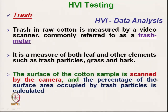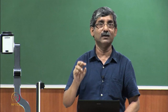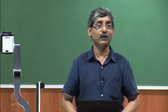The surface of the cotton sample is scanned by the camera. Any trash present inside the fibre mass will not actually be measured here, but the assumption is that trash particles are evenly distributed. The percentage of the surface area occupied by trash is calculated. Knowing the total area and the total area of trash or foreign particles, we can calculate the trash content.